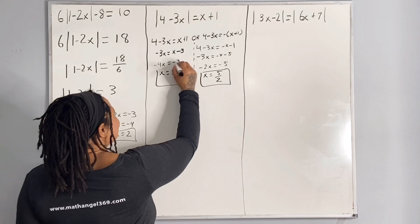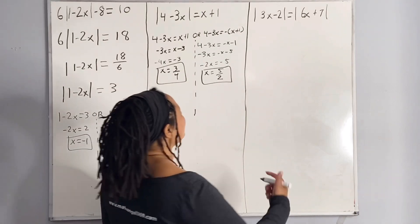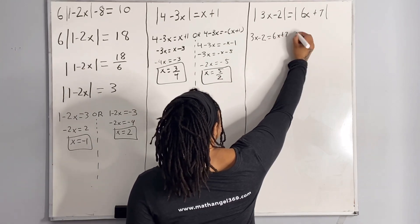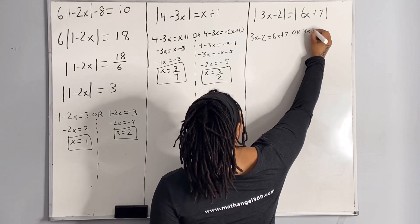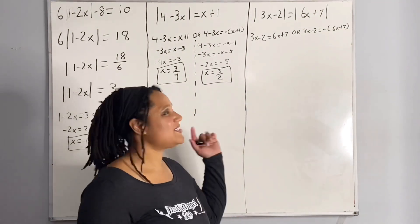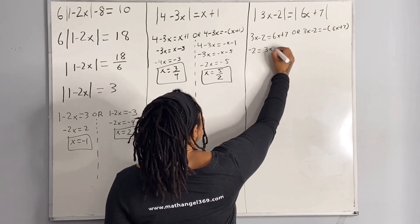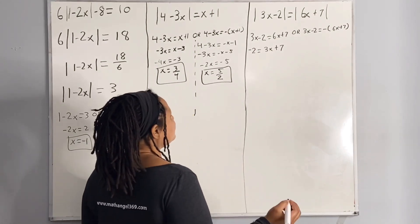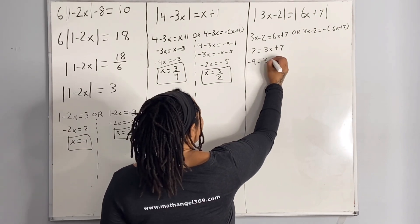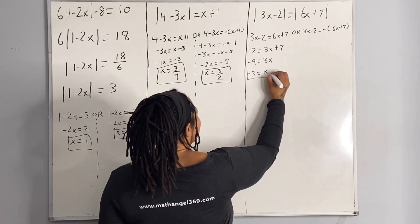And that is how you do the second problem. Now let's look at our last problem — the rules still apply. So I'm going to take 3x minus 2 is equal to 6x plus 7, or 3x minus 2 is equal to negative 6x plus 7. Solving the first one: we get negative 2 is equal to 3x plus 7. Subtracting 7 from both sides, we get negative 9 is equal to 3x. Dividing both sides by 3, we get x is equal to negative 3.